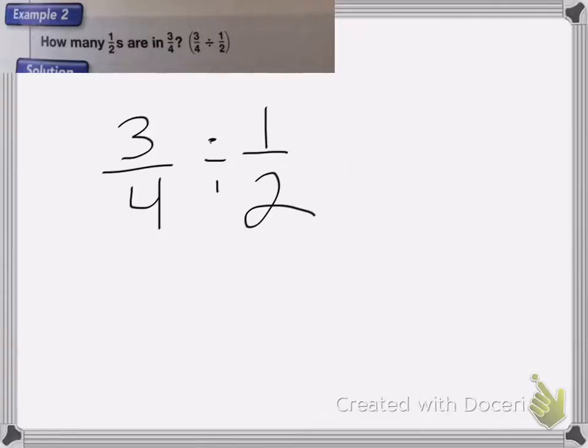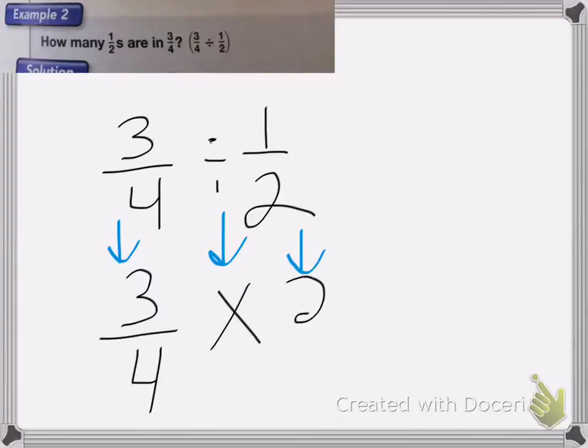So if I was to do it, 3 fourths would stay the same, the division sign would become a multiplication sign, and my 1 half would become 2 over 1. Now I can multiply that across, 3 times 2 is 6, 4 times 1 is 4, and I need to reduce that, or just change it to a mixed number. So a mixed number would be 1 and 1 half.